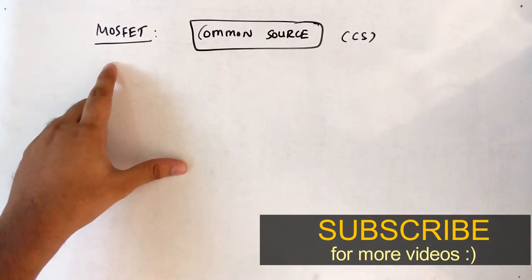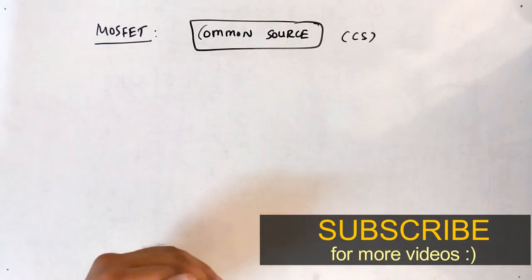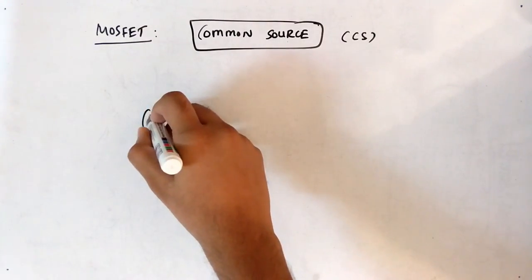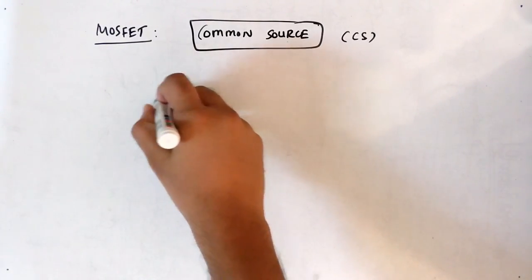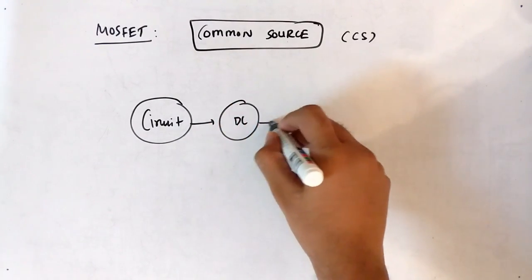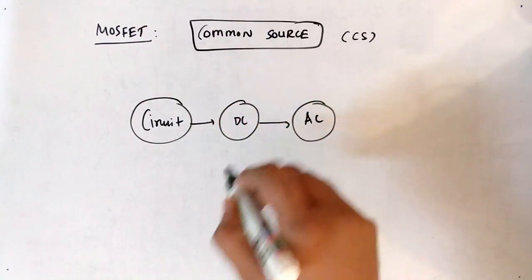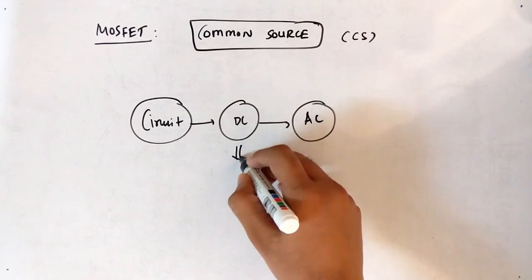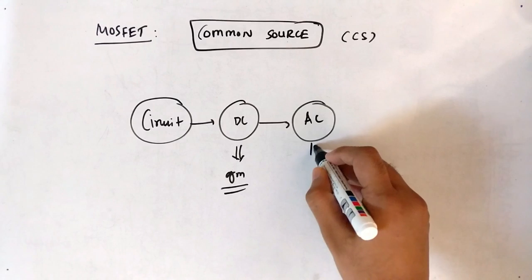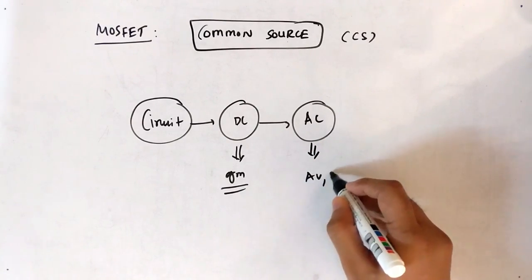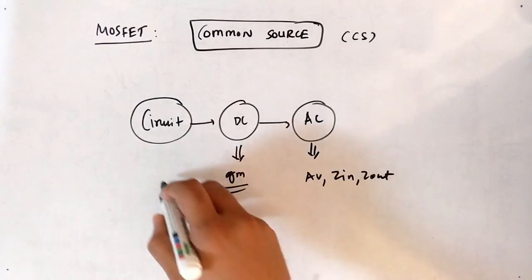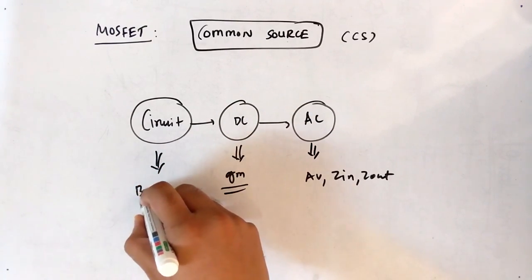Hello friends, today our topic is MOSFET. In this video we will see the common source configuration. First we will see the circuit, then we will jump on to the DC analysis, and further we will see the AC analysis. In DC analysis we are finding the GM term, and in AC analysis we will find the gain, input impedance, output impedance. The circuit will be of bypassed RS.